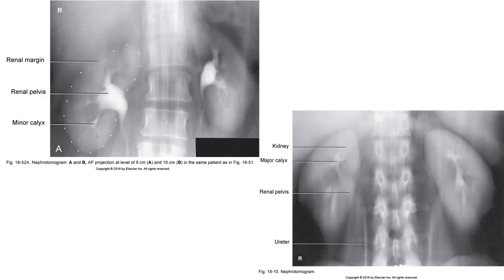This procedure is not very common anymore with the addition of CT, but these images show the advantages of seeing the contrast-filled kidneys free of superimposition of the bowel, ribs, and dense muscle tissue of the lower back. You can tell the image on the left has a focal point that is more anterior than the image on the right because the vertebral bodies are in focus on the left, whereas in the image on the right, the lamina, spinous processes, and transverse processes can be seen more clearly.